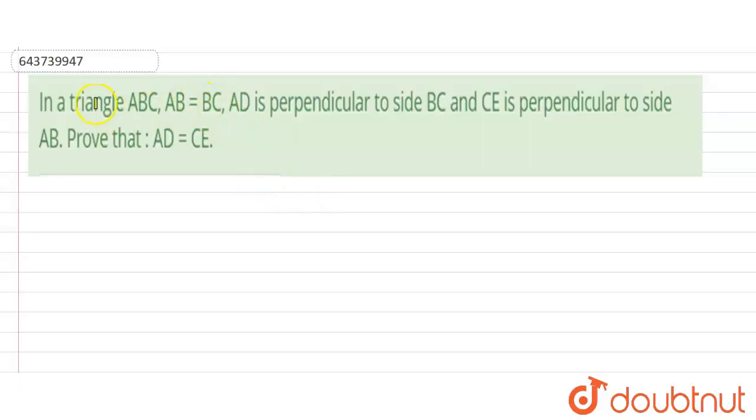Hello students, in this problem we have given in triangle ABC, side AB is equals to BC, AD is perpendicular to side BC, and CE is perpendicular to side AB. Then we have to prove that AD is equals to CE.